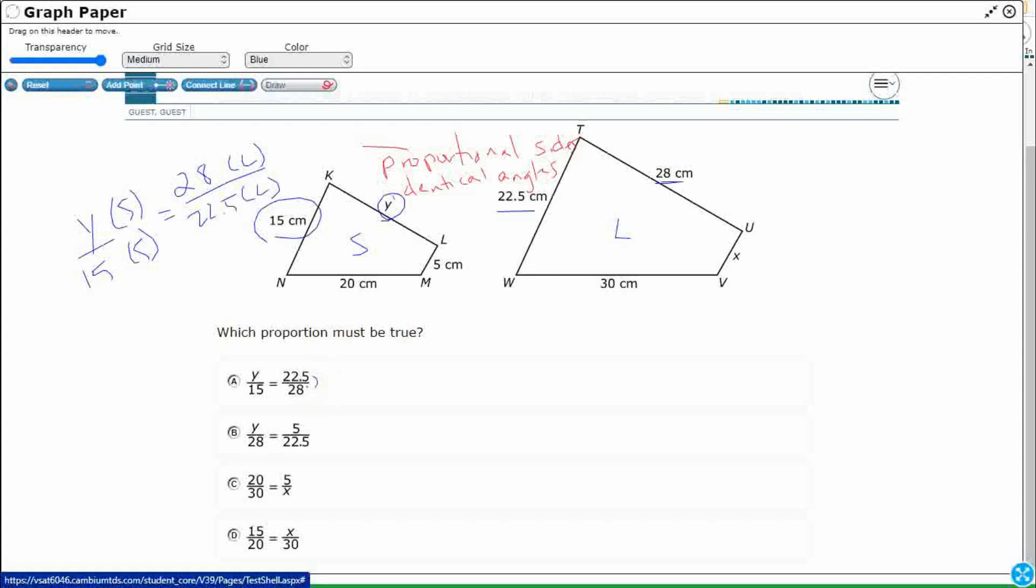But you see what they did? They swapped it. That 28 needs to be in the numerator because that goes with the y. So the right numbers, they just swapped that second one. So that was within the small to small.